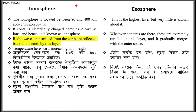The ionosphere is located between 80 and 400 km above the Mesosphere. It contains electrically charged particles known as ions, hence it is known as the ionosphere. Radio waves transmitted from the earth are reflected back to the earth by this layer. The temperature here starts increasing with height.